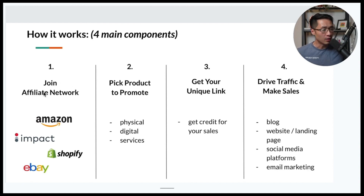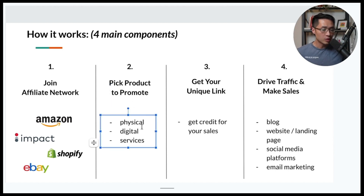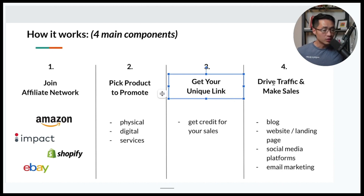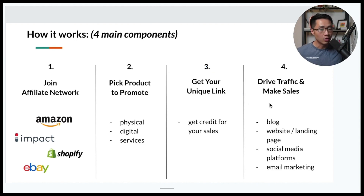Step number one is to join an affiliate network — these are networks you can join for free to find different brands or companies to work with. Next, pick a product to promote: it could be a physical product, a digital product, or even a service. Then get your affiliate links, which are your own unique links where you get credit for sales. The final and most important step is to drive traffic and make sales — whether through a blog, website, landing page, social media platforms, or email marketing.